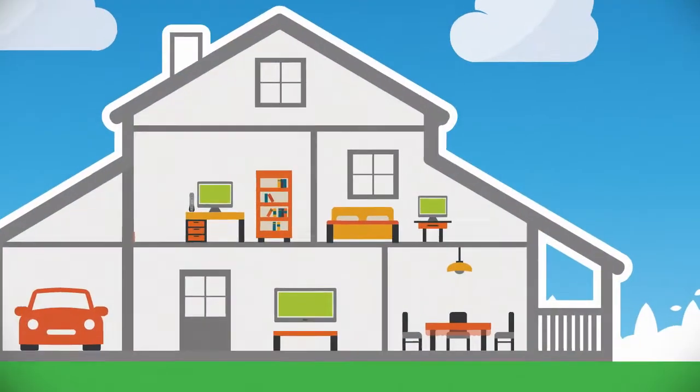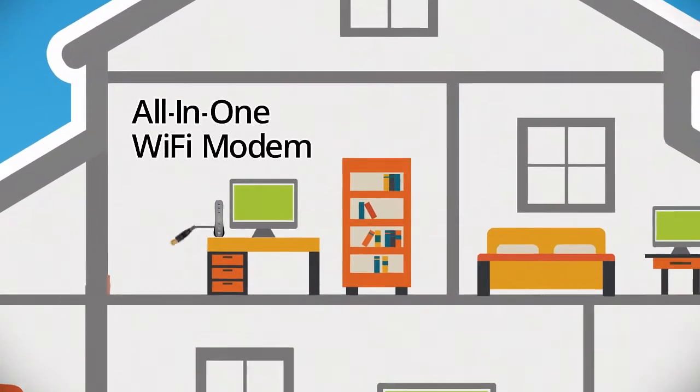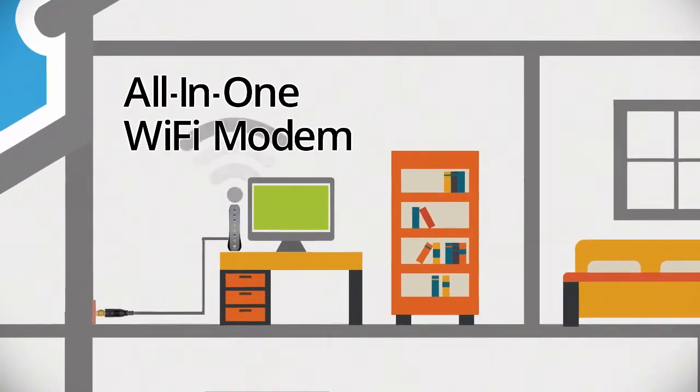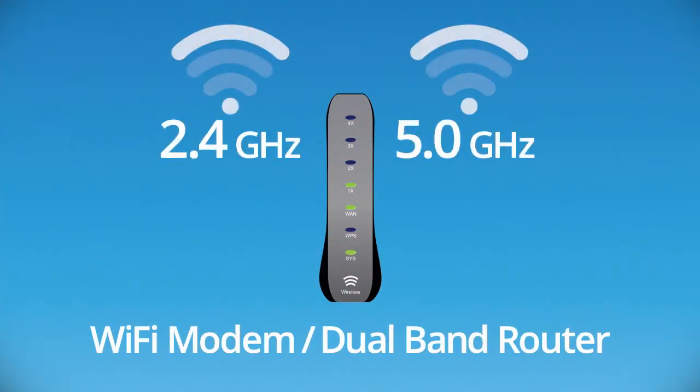It starts with upgrading to the latest all-in-one Wi-Fi modem and dual-band router combo. It's the heart of your Wi-Fi system, connecting your home to the Internet via your cable connection. Dual-band broadcasts in both 2.4 GHz and 5 GHz bands.